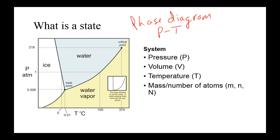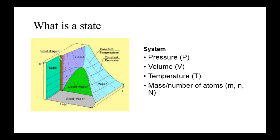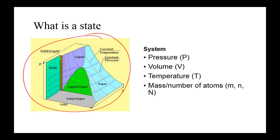Even though we've looked at the phase diagram with just pressure and temperature, we now know that volume also changes. So we would actually have a three-dimensional graph that looks something like this for a phase diagram. However, when we look at this, it's a little bit hard to determine what these lines are and what it looks like at a specific temperature. That's where the idea of having the phase diagram of P versus T comes from. But now, when we talk about thermodynamic states, we're actually going to be looking at what are known as PV diagrams.